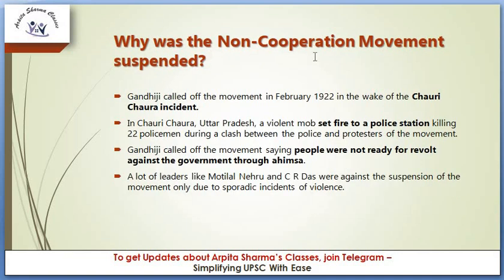Why was the non-cooperation movement suspended? Gandhiji called off the movement in February 1922 in the wake of the Chauri Chaura incident. In Chauri Chaura, Uttar Pradesh, a violent mob set fire to a police station, killing 22 policemen during a clash between police and protesters. Gandhiji called off the movement saying that people were not ready for revolt against the government through Ahimsa.